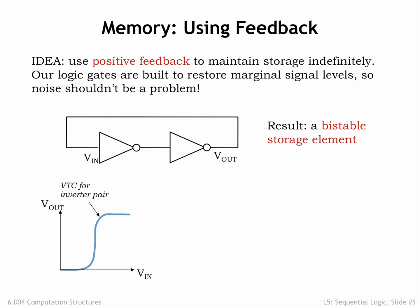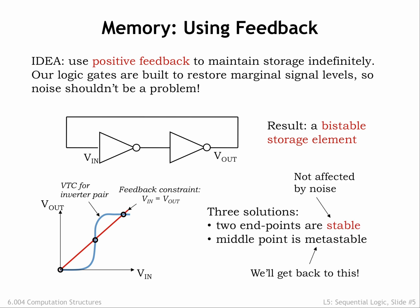Here's the voltage transfer characteristic showing how Vout and Vin of the two-inverter system are related. The effect of connecting the system's output to its input is shown by the added constraint that Vin equals Vout. We can then graphically solve for values of Vin and Vout that satisfy both constraints. There are three possible solutions where the two curves intersect. The two points of intersection at either end of the VTC are stable — small changes in Vin due to electrical noise have no effect on Vout, so the system returns to its stable state. The middle point of intersection is metastable; in theory the system could balance there forever, but the smallest perturbation will cause the voltages to quickly transition to one of the stable solutions. Since we're planning to use this bistable storage element as our memory component, we'll need to figure out how to avoid getting the system into this metastable state.